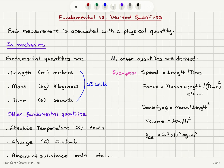In all branches of physics, we deal with quantities that are either fundamental or derived. Each measurement is associated with a physical quantity which is either fundamental or derived. In mechanics, the fundamental quantities are: length, measured in meters (SI units — the International System of Units); mass, measured in kilograms; and time, measured in seconds. All other quantities in mechanics are derived from these three. For example, speed is distance traveled per unit time — length divided by time.